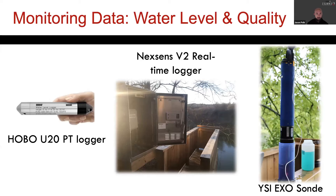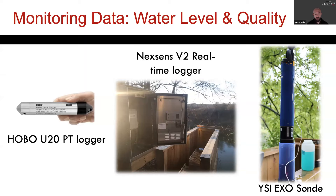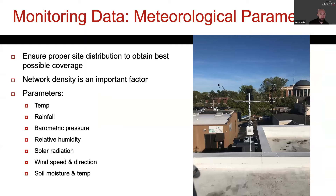For water level we pretty much use HOBO pressure transducer loggers — nice, self-contained, easy to use, fairly inexpensive, and really don't need maintenance other than cleaning and occasional battery replacement. We use NexSens V2 real-time loggers to transmit data back via cellular telemetry. We typically use YSI EXO1 or EXO2 sondes to collect the basic geochemistry and water quality parameters, and those are transmitted back to us in real time using the NexSens logger. We also have some additional HOBO pressure transducers now set up for real-time cellular telemetry transmission.